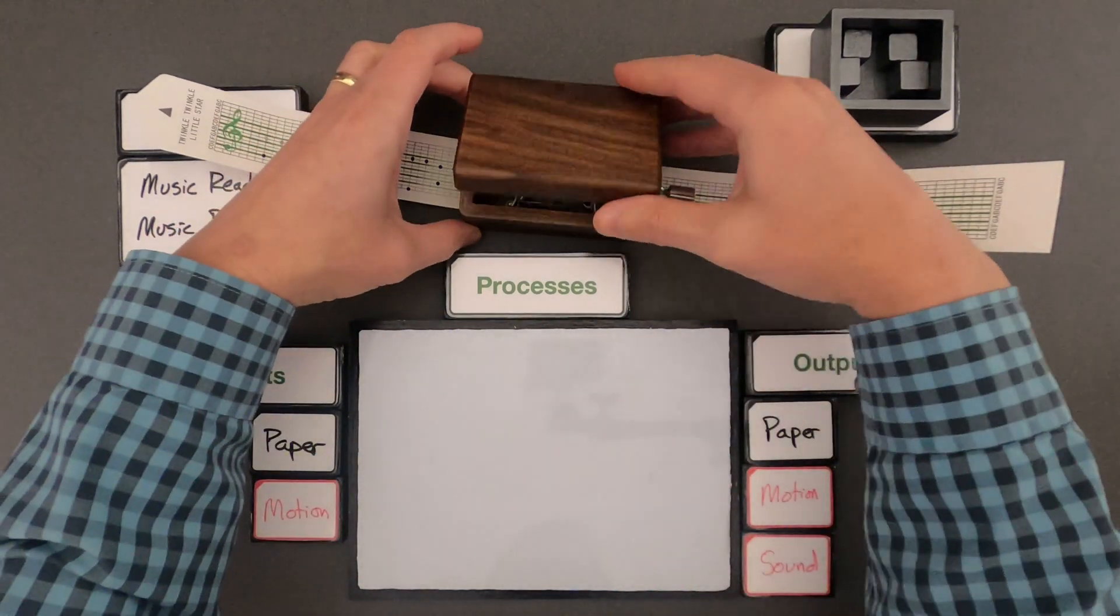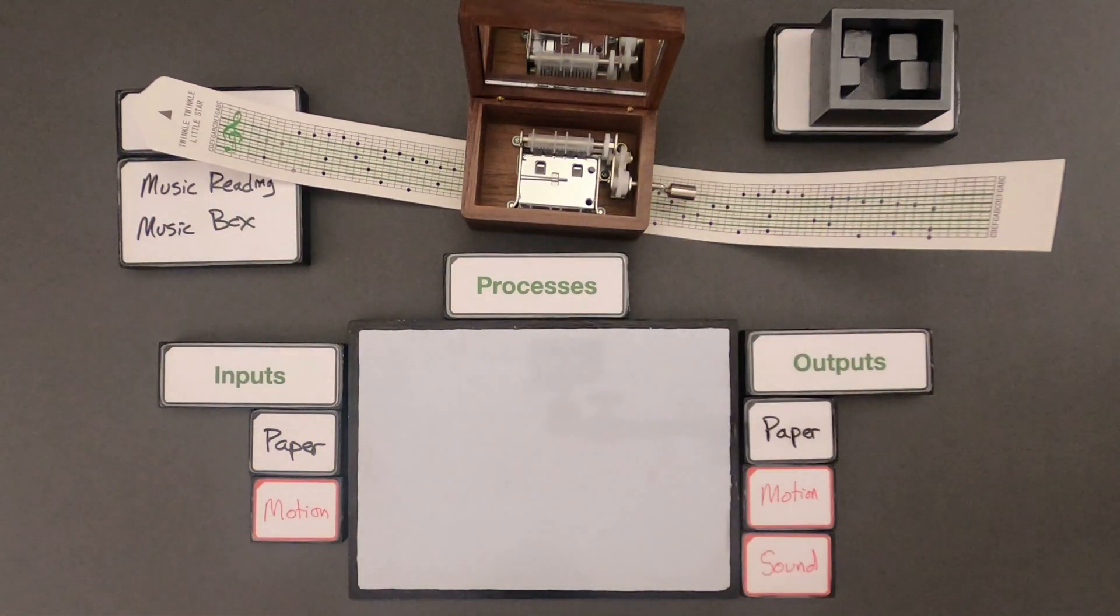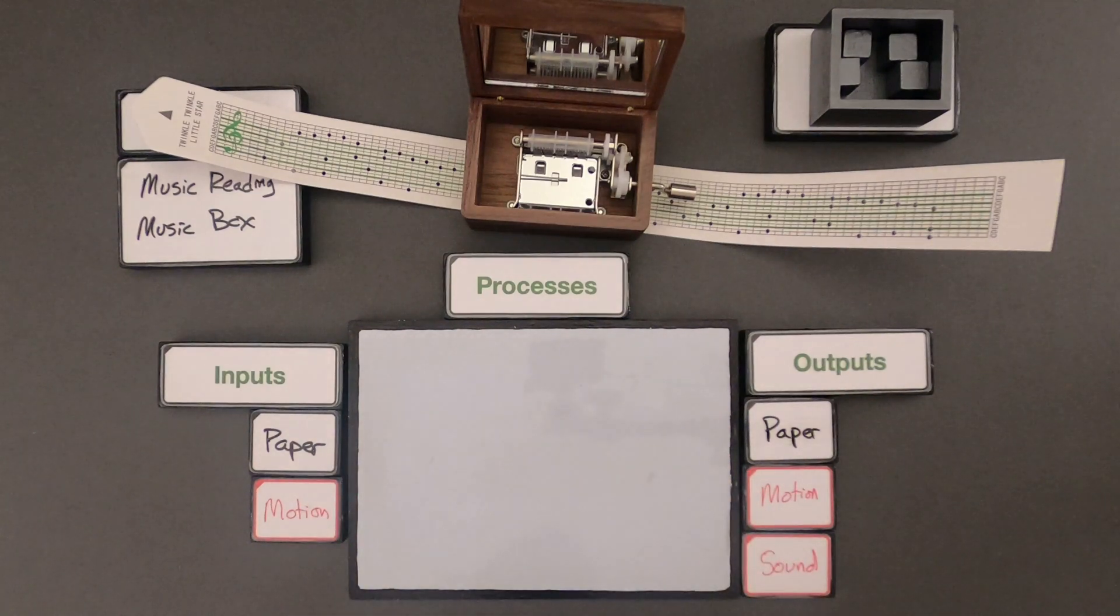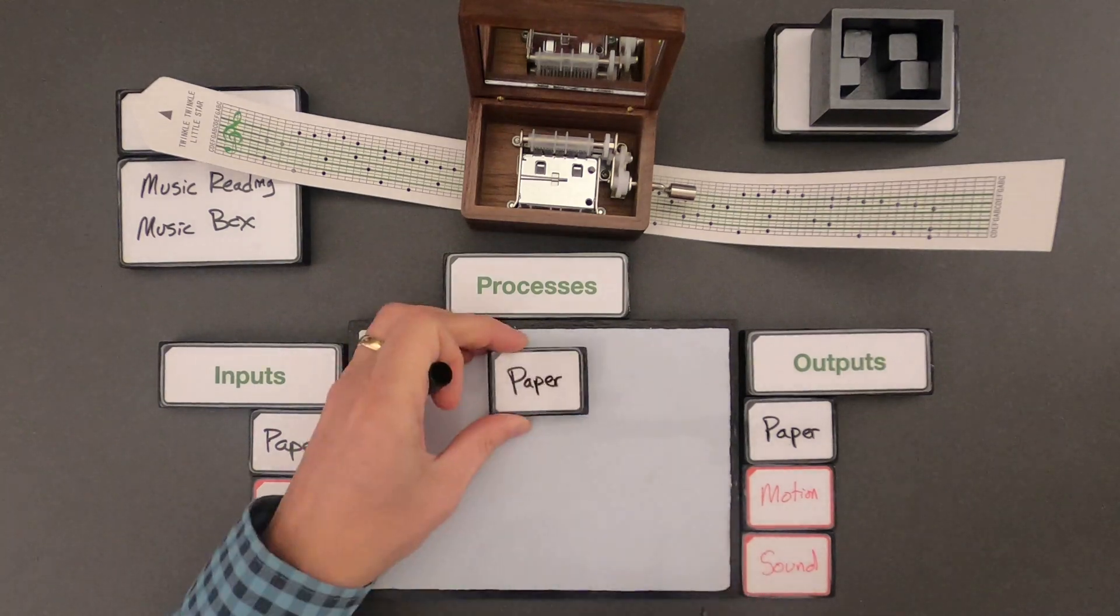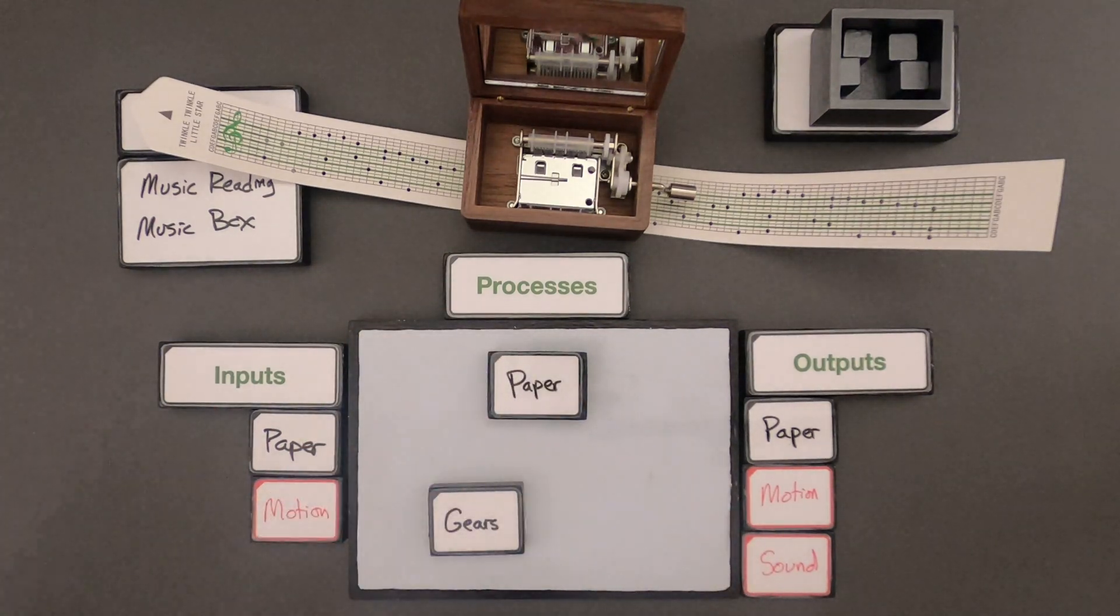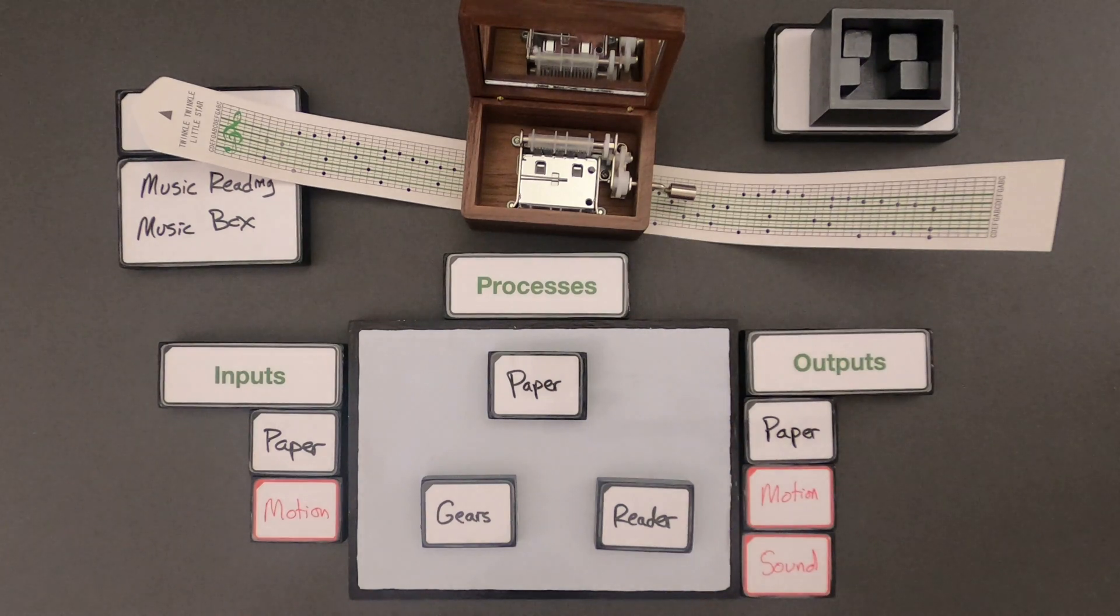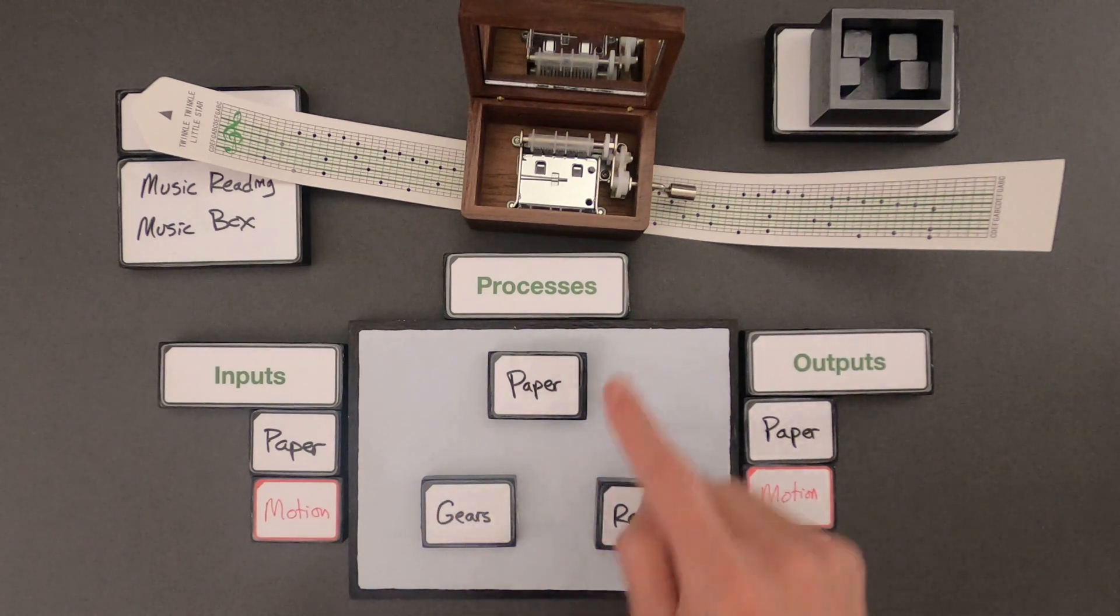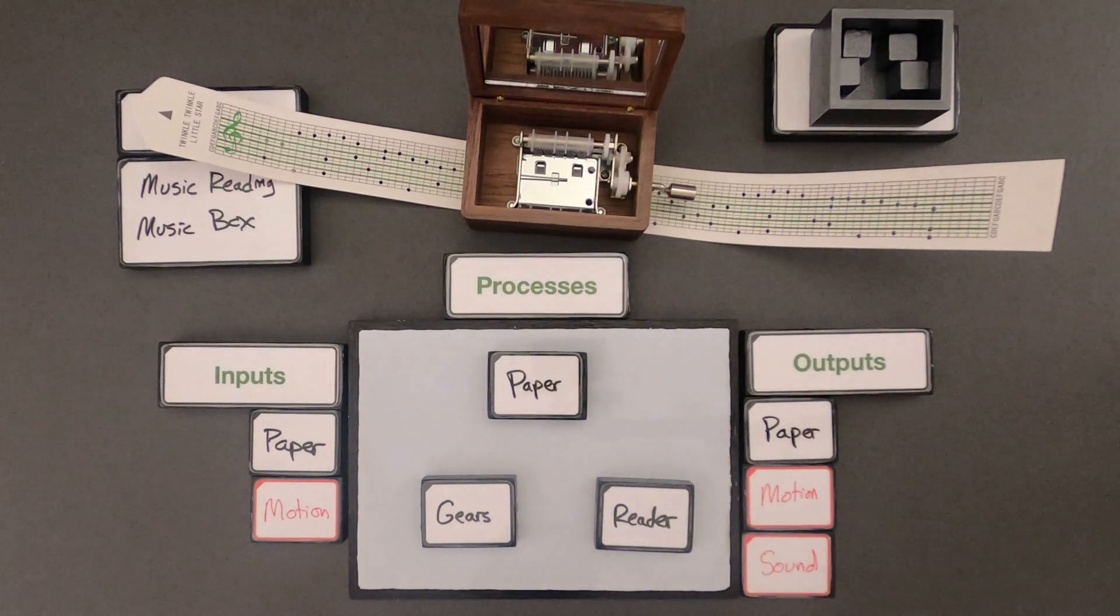Next thing I should do is just think about what's happening within the system and I should figure out what's important matter and what's important energy on the inside of the system. So the big parts inside the system that I think are important are the paper going through the music box and coming out. That's important. We also have the gears on the inside that are moving everything. And then finally we have the reader. The reader is decoding what's in the paper itself.